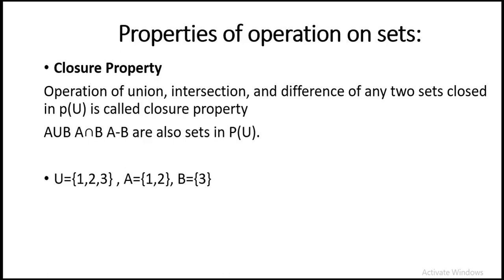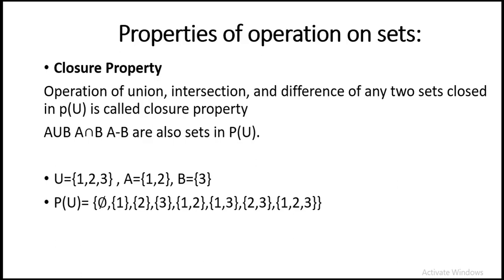It says that these two sets are closed in the power set of the universal set. First we need to make the power set of the universal set using the formula we learned earlier. The power set of the universal set contains: the empty set, {1}, {2}, {3}, {1,2}, {1,3}, {2,3}, and {1,2,3}.